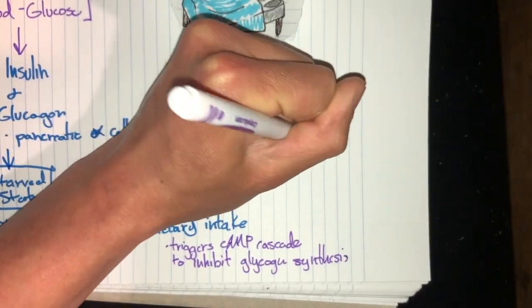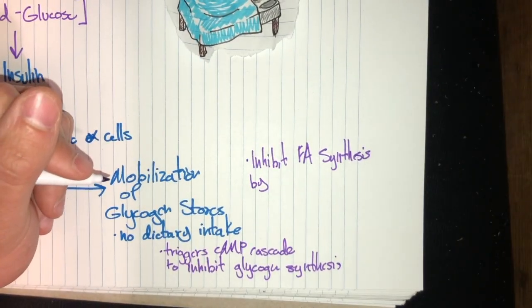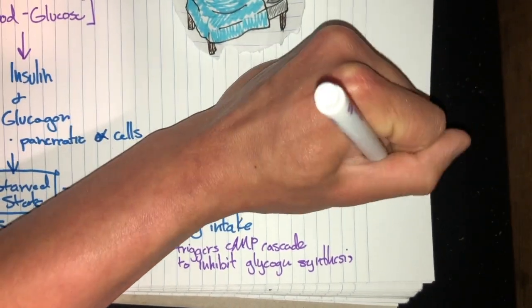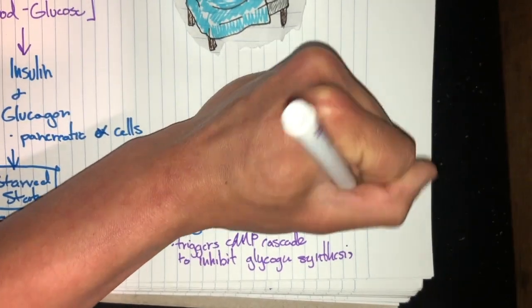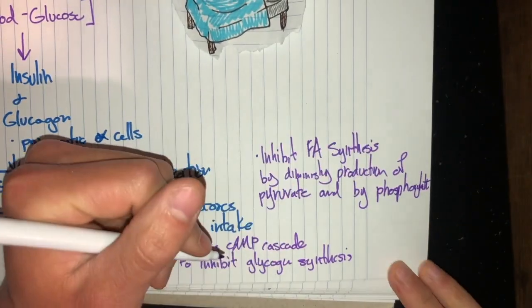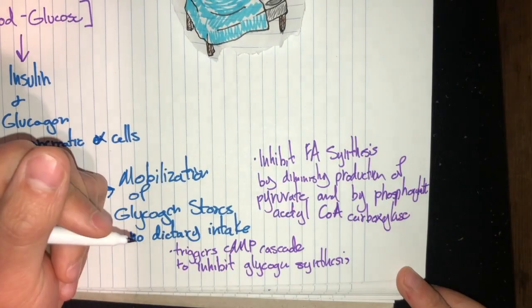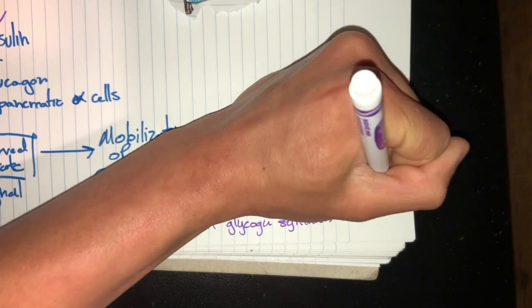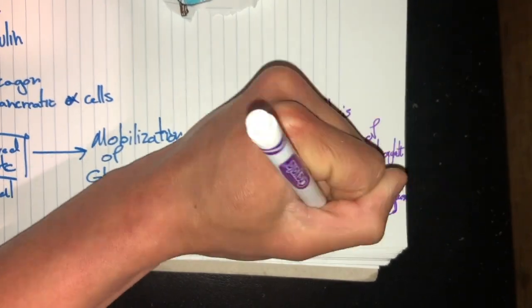And this inhibits fatty acid synthesis by diminishing the production of pyruvate and phosphorylating acetyl-CoA carboxylase. The system also stimulates gluconeogenesis in the liver and blocks glycolysis by lowering that fructose-2,6-bisphosphate.